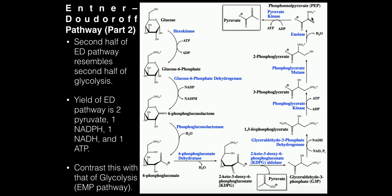Phosphoenolpyruvate can be converted to pyruvate by pyruvate kinase, which takes the phosphate from phosphoenolpyruvate and puts it on ADP to make ATP. That is catalyzed by pyruvate kinase.